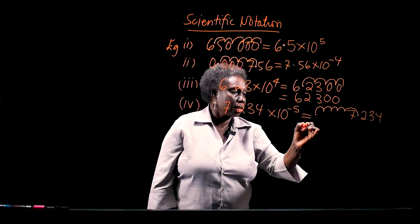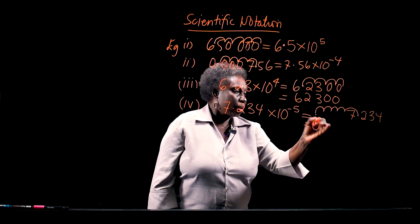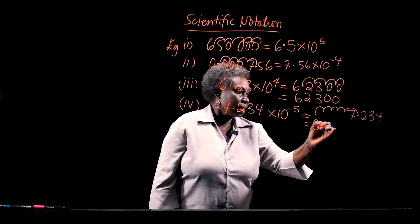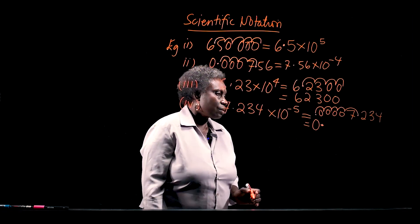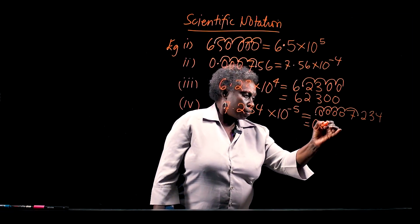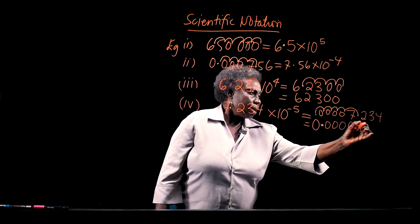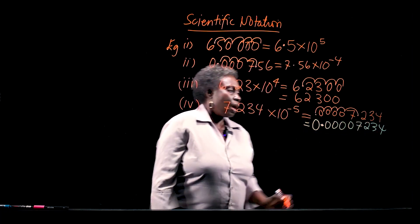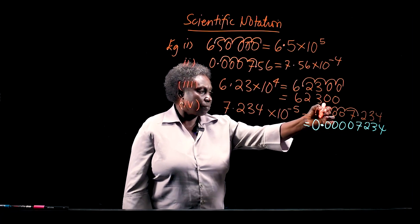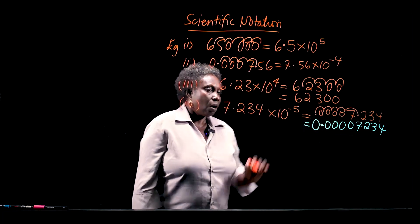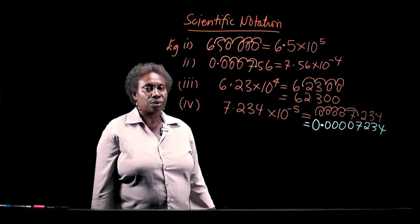This is where my decimal point is. I put a zero here before the decimal point, and where the gaps are, I fill them with a zero. So I have 0.00007234 as an ordinary number. I have moved 5 places to the left and filled the gaps with a zero. So my answer as an ordinary number is 0.00007234.